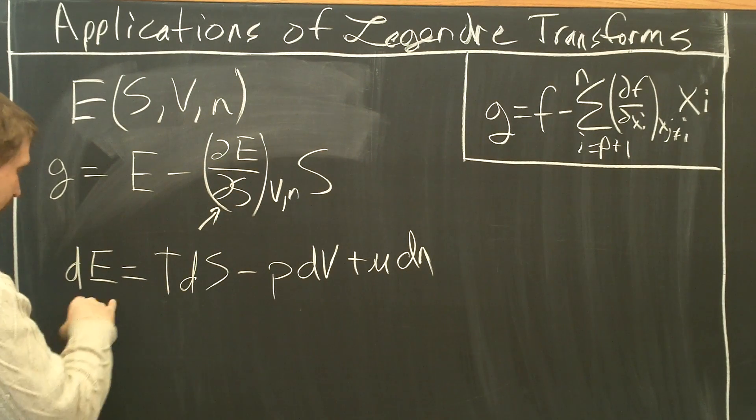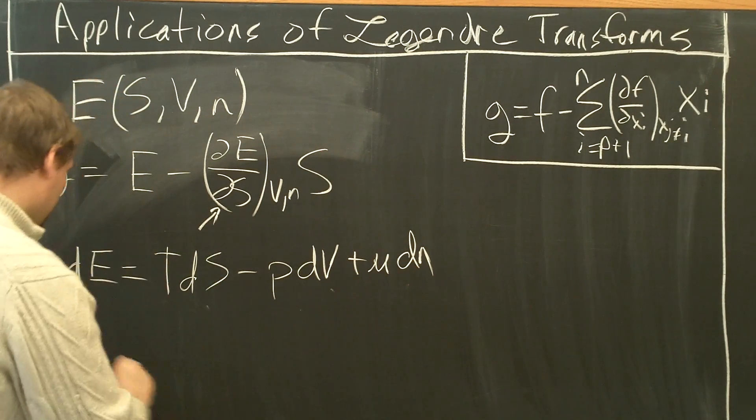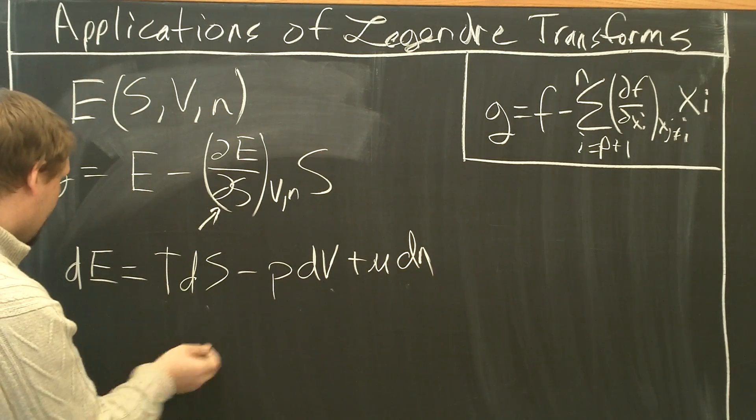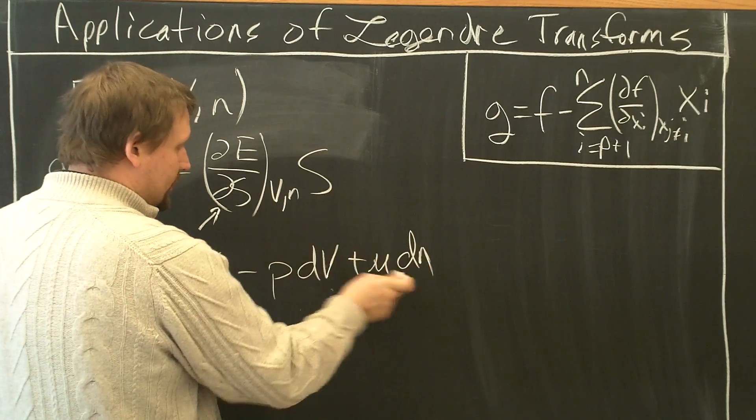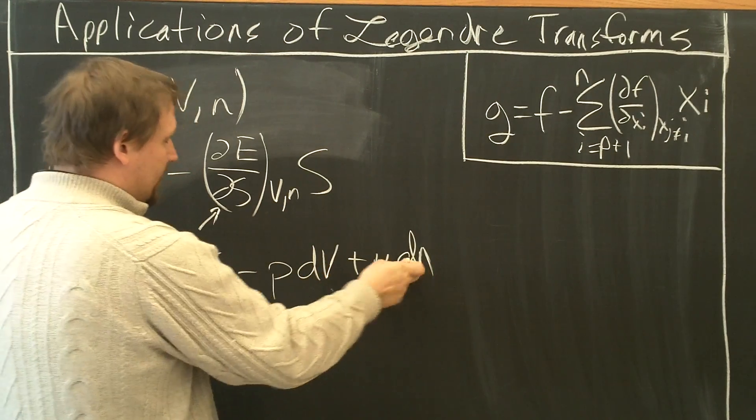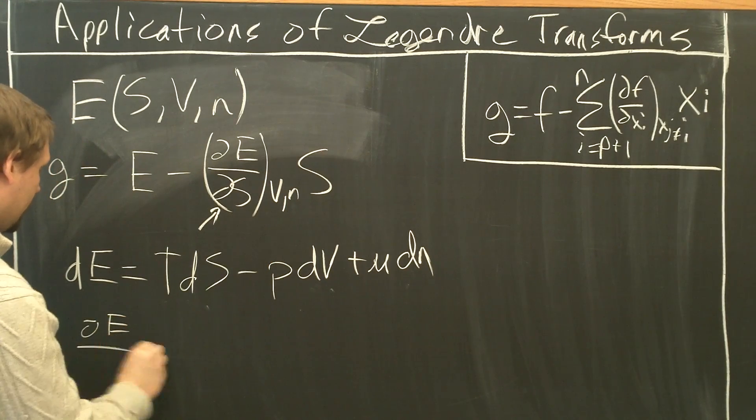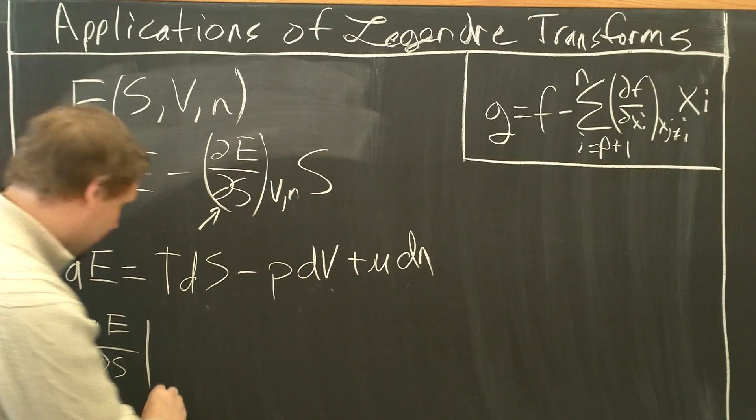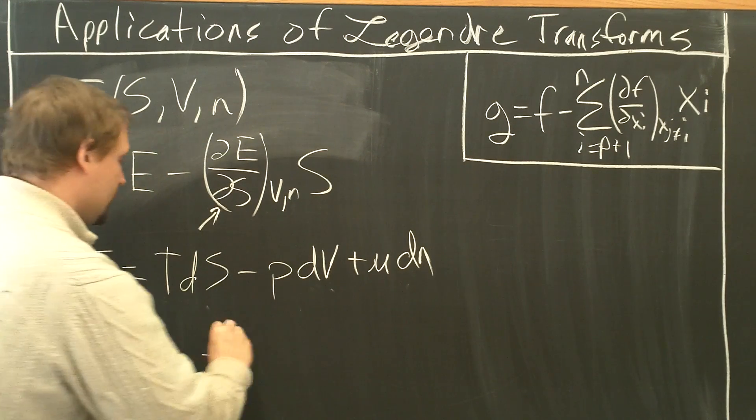From this, you can easily see that partial E partial S is equal to T. So this is a path-dependent state function that depends on multiple variables, S, V, and N. We can take this to be, now, dividing through by dS. dV kept fixed because it's kept constant. So this is zero. dN is zero because that's kept constant. We end up with del E, del S,